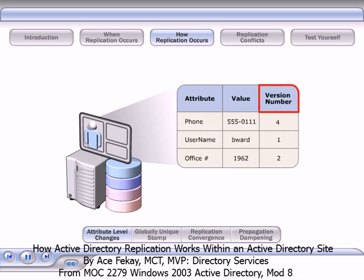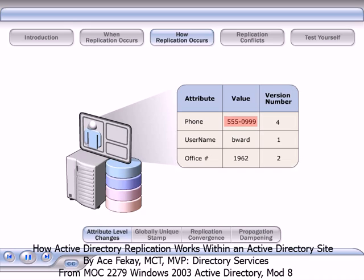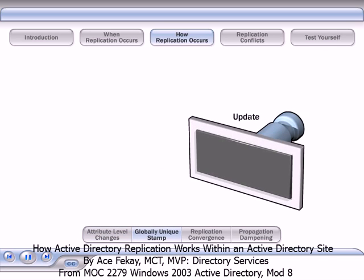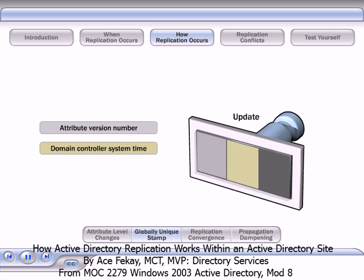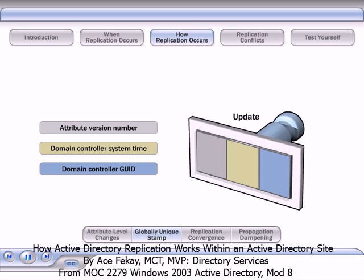Each attribute has a version number. When an update is made to an attribute value on a domain controller, that update is called an originating update. When an originating update is implemented, the version number of the updated attribute increases by one. A globally unique stamp travels with each update and contains the attribute version number, a timestamp that indicates the system time on the originating domain controller, and the GUID, or Globally Unique Identifier, for the originating domain controller.